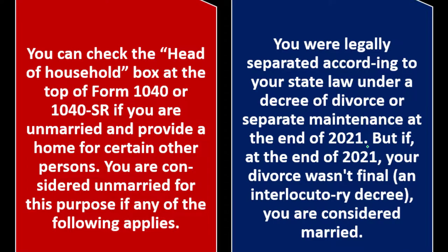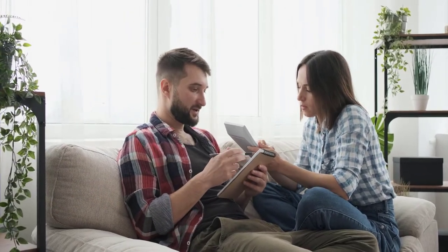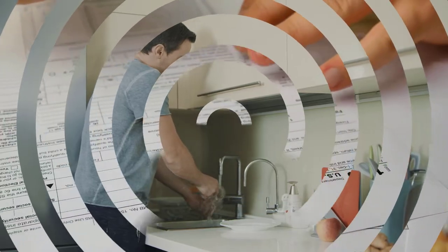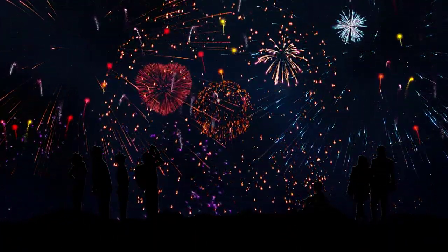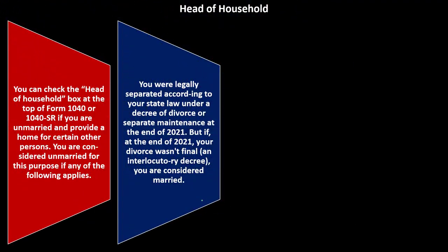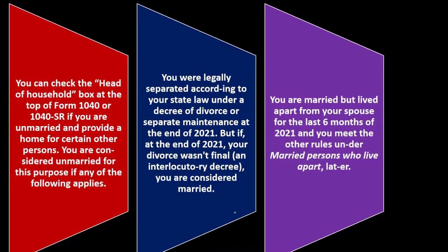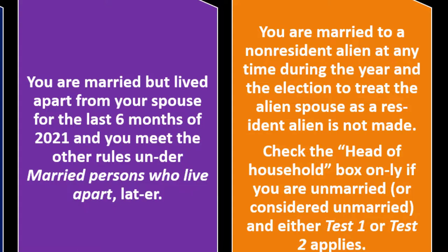You also want to make sure the two spouses are in alignment — if one spouse files married filing jointly or separately and the other files as single or head of household, that could be incongruous on the tax return. If at the end of 2021 your divorce wasn't final — an interlocutory decree — you are considered married. You are married but lived apart from your spouse for the last six months of 2021 and meet the other rules under married persons who live apart. You are married to a nonresident alien at any time during the year and the election to treat the alien spouse as a resident alien is not made. Check the head of household box only if you are unmarried or considered unmarried and either test one or test two applies.